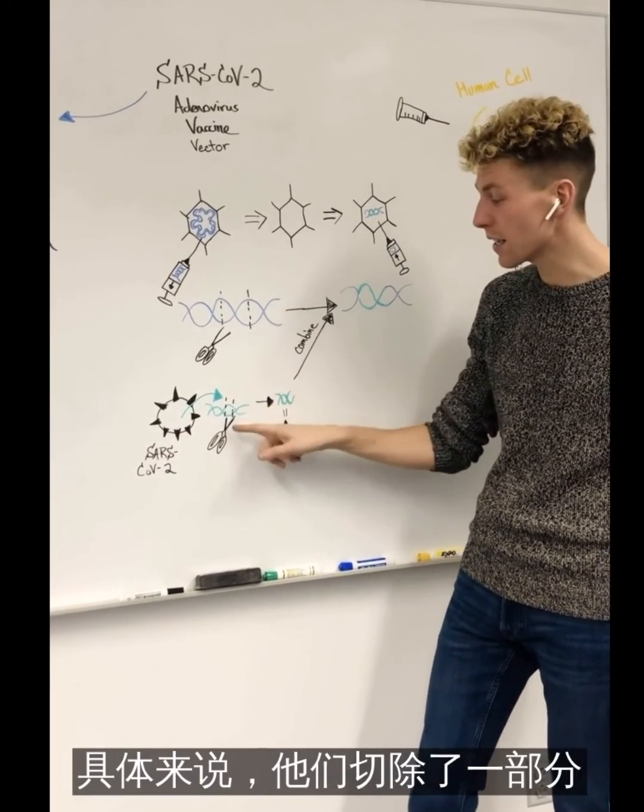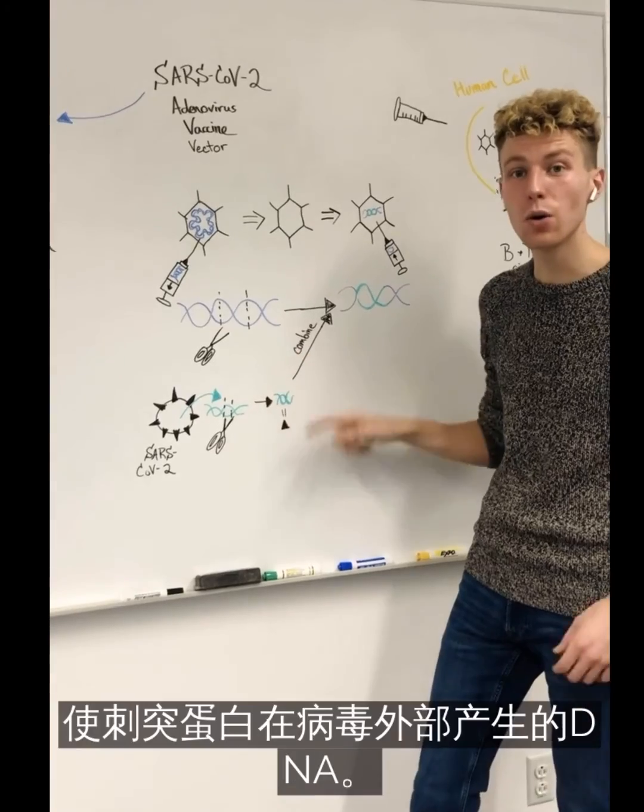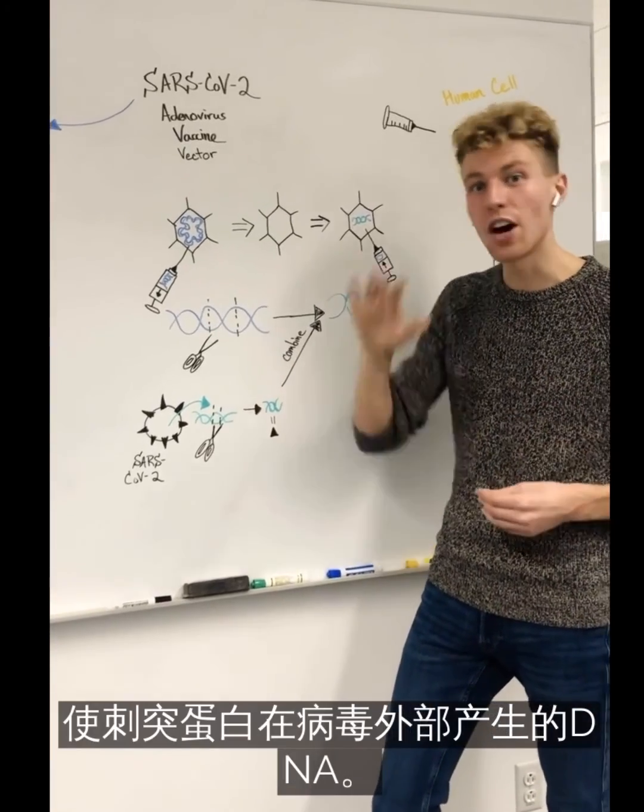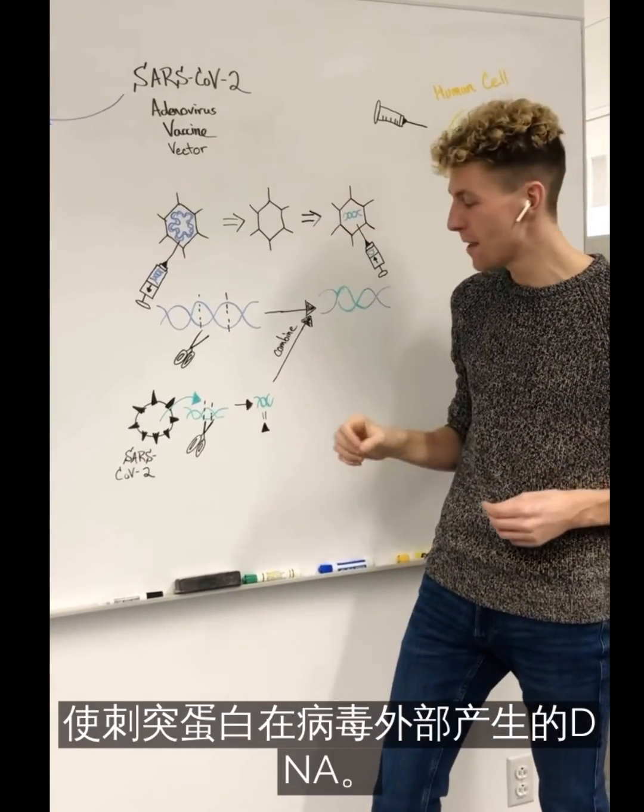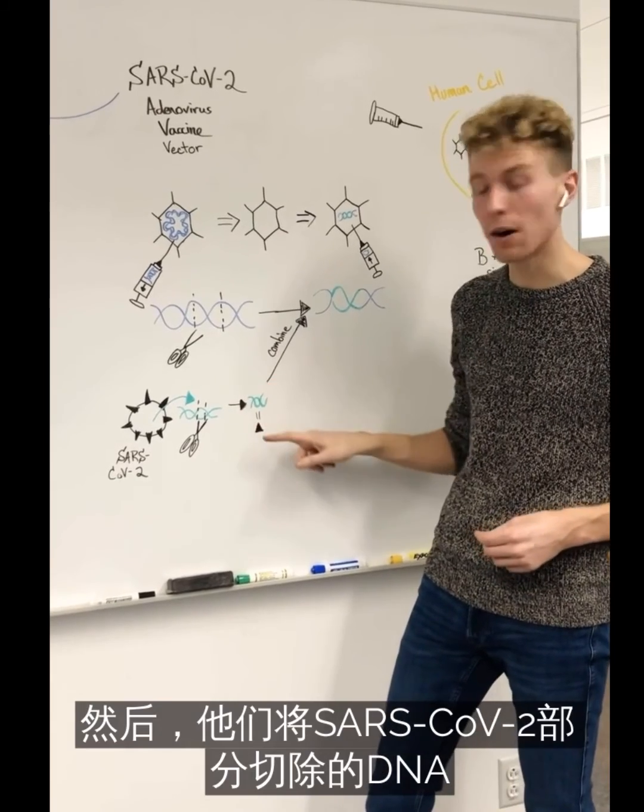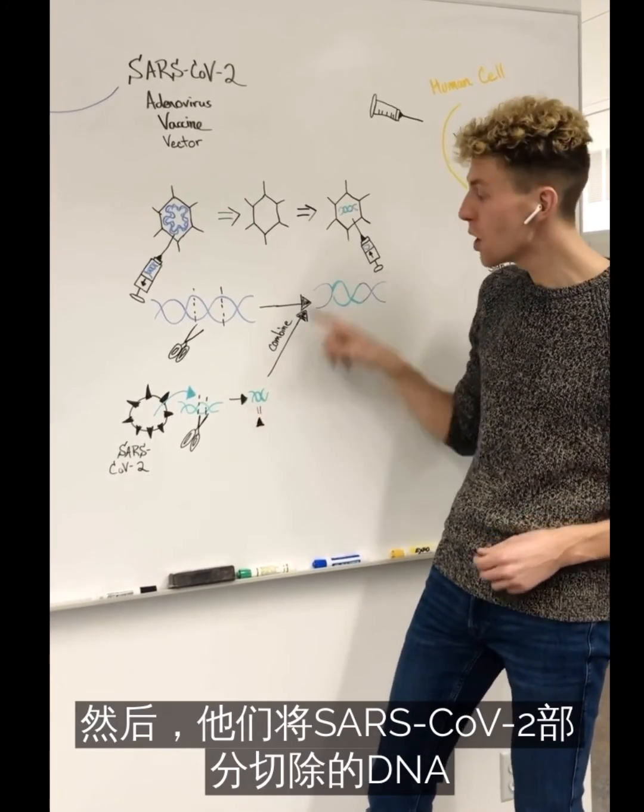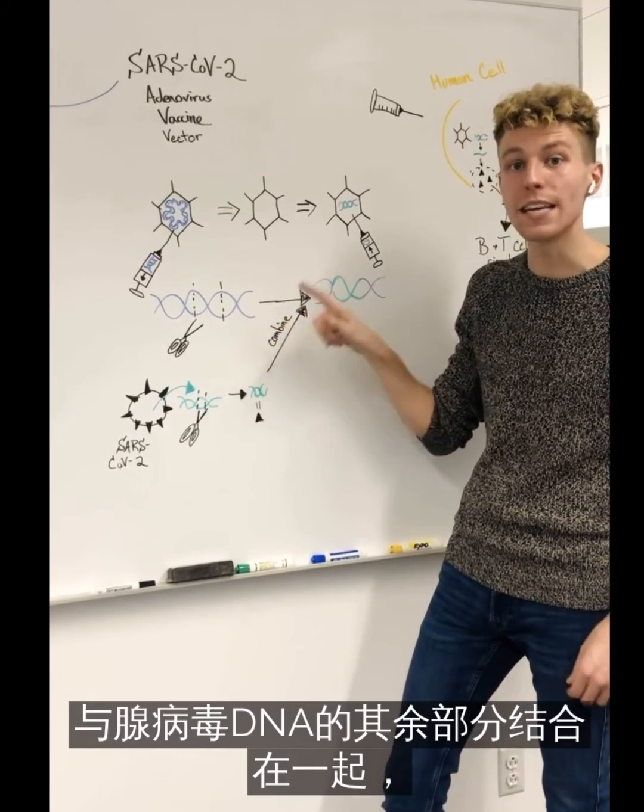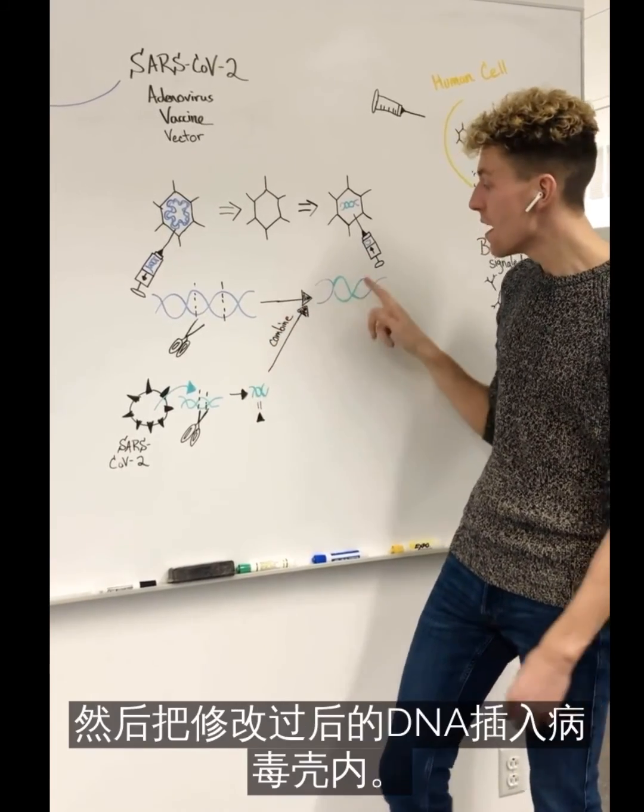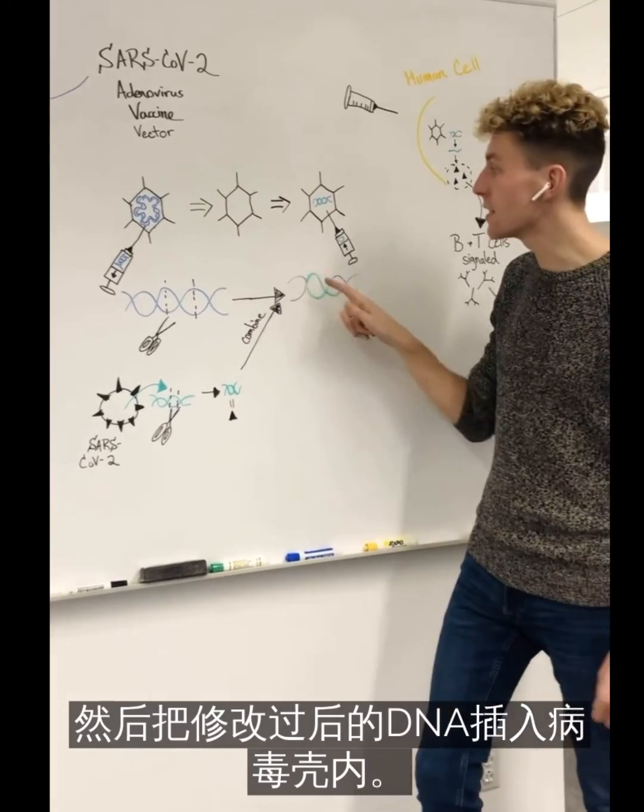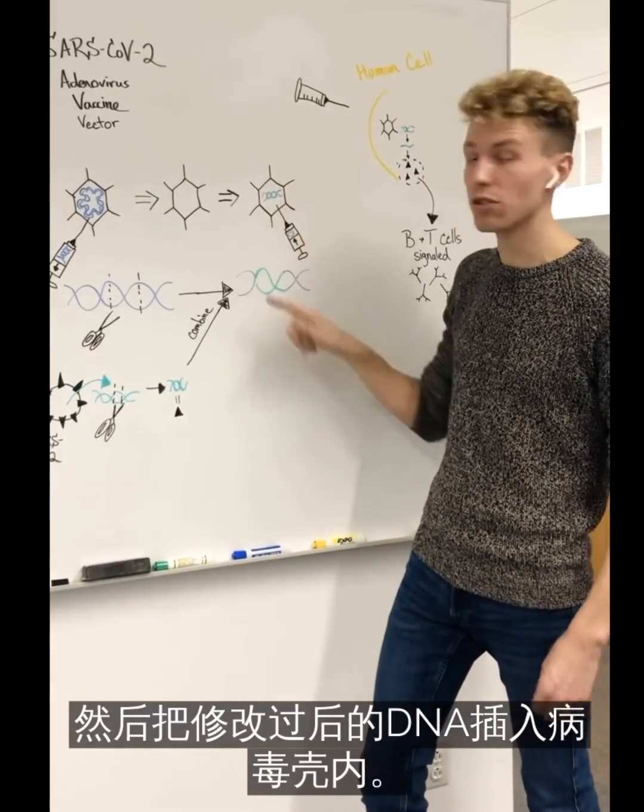Specifically, they cut out a single part of the DNA that encodes to make that spike protein on the outside of the virus. They then combine that small part of the spike protein DNA from SARS-CoV-2 with the remaining parts of the Adenovirus DNA. This modified DNA is then inserted back into the viral shell.